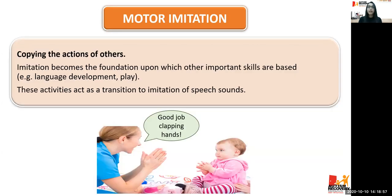Moving on, we have motor imitation — copying the actions of others. For example, the therapist or the mom gets the child to imitate the action 'clap hands.' Once the child claps hands, the adult reinforces with 'good job clapping hands.'